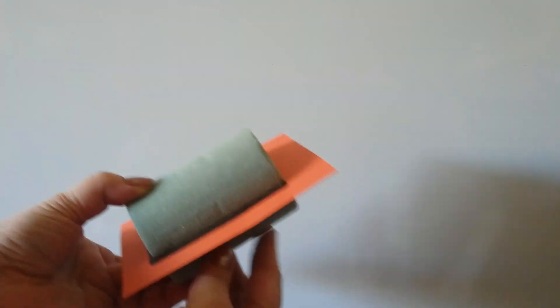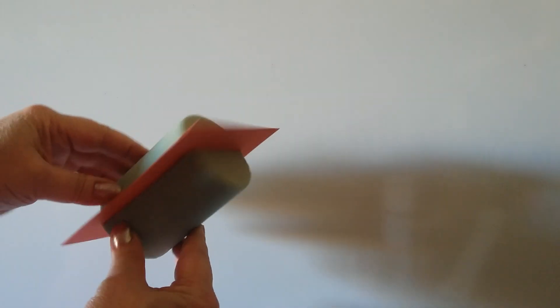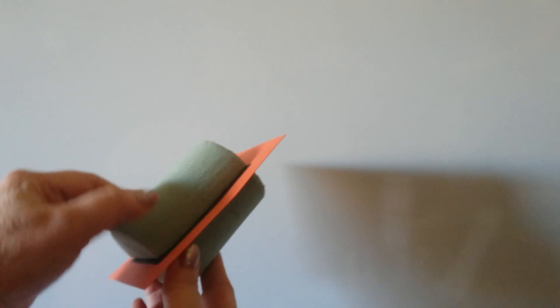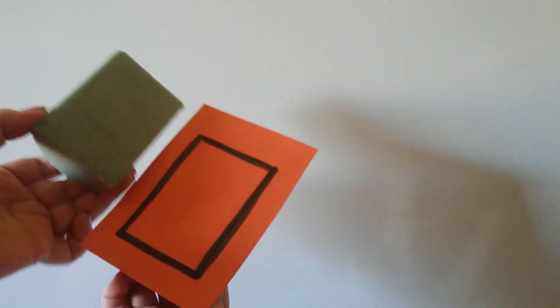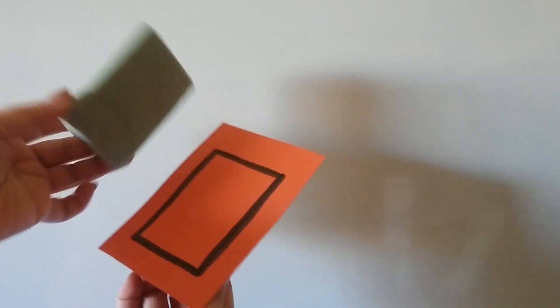So here I have a foam cube that I got from a craft store and some poster board. And we can see this is a cylinder. And if we slice it with this red plane, this poster board, we can see that the shape we get is a rectangle.